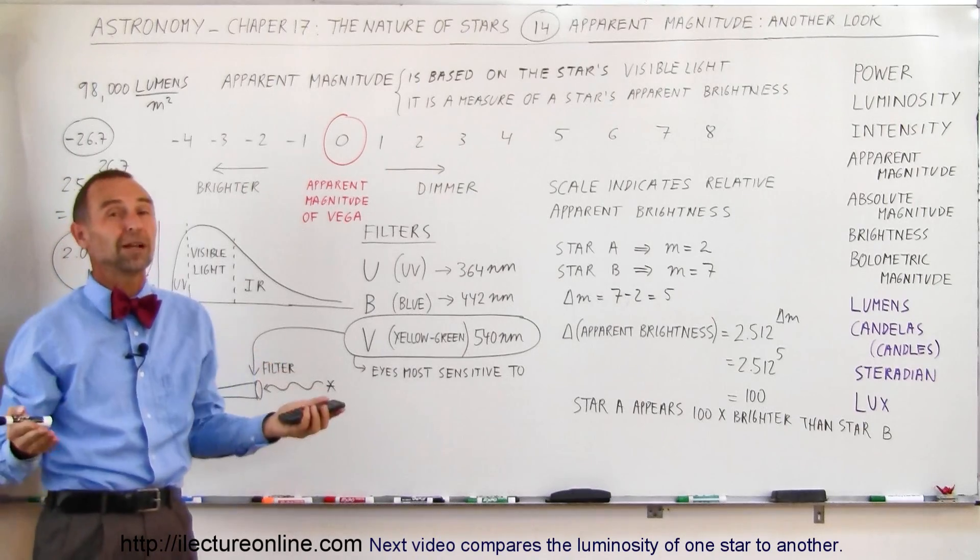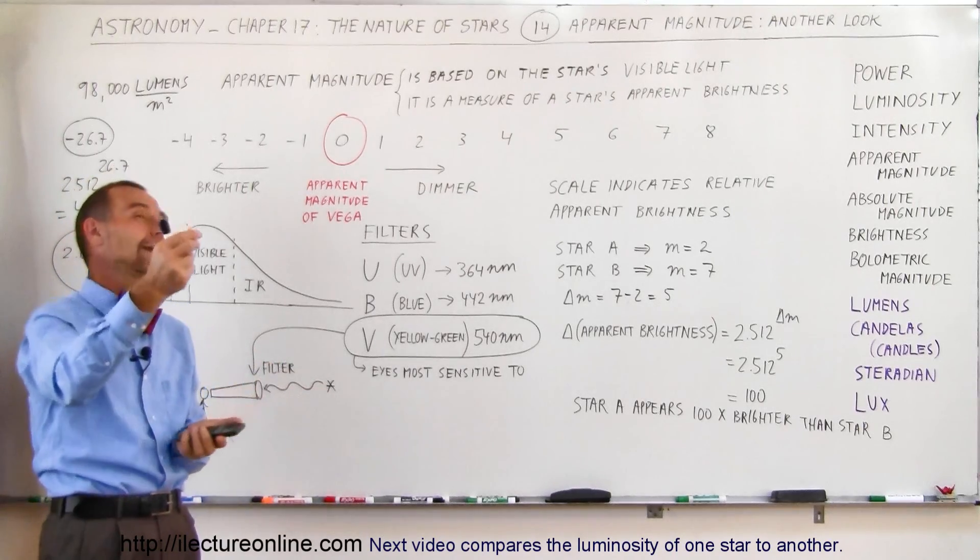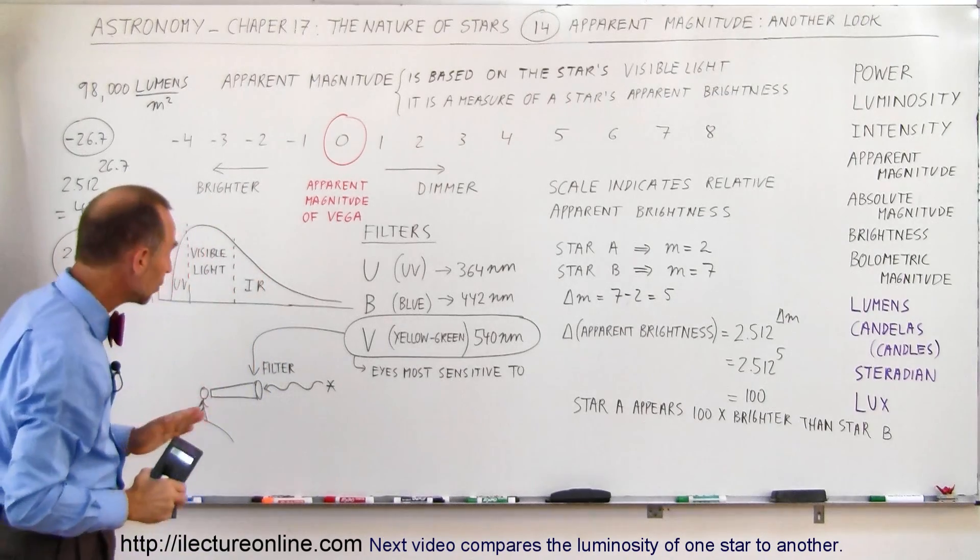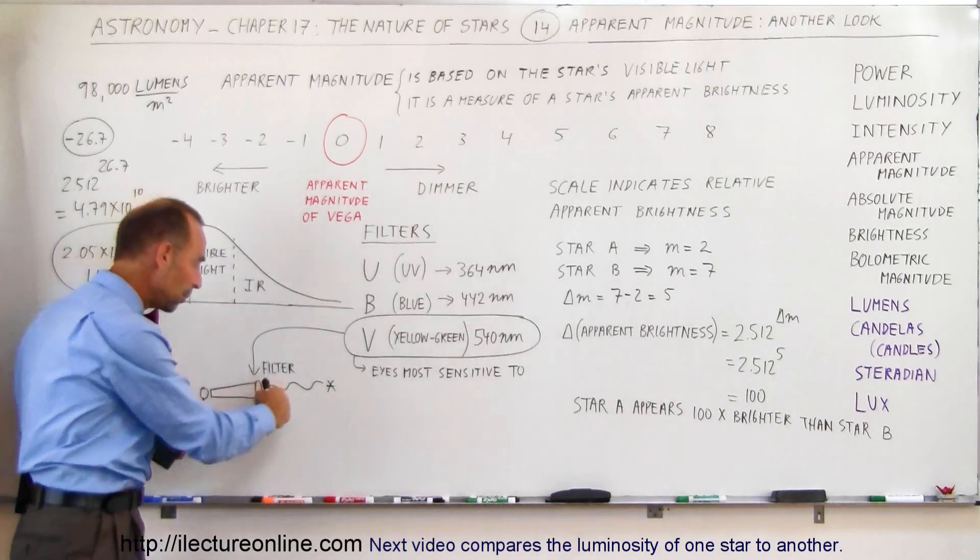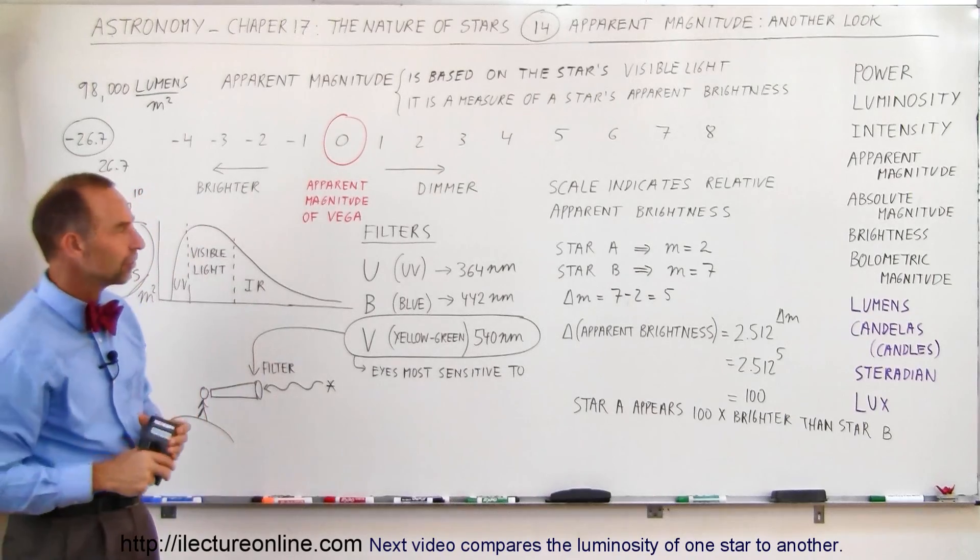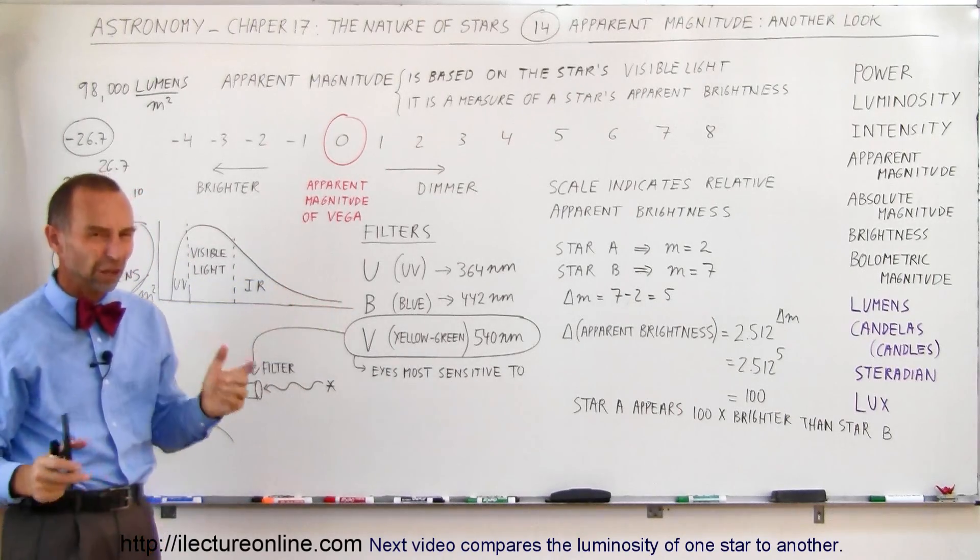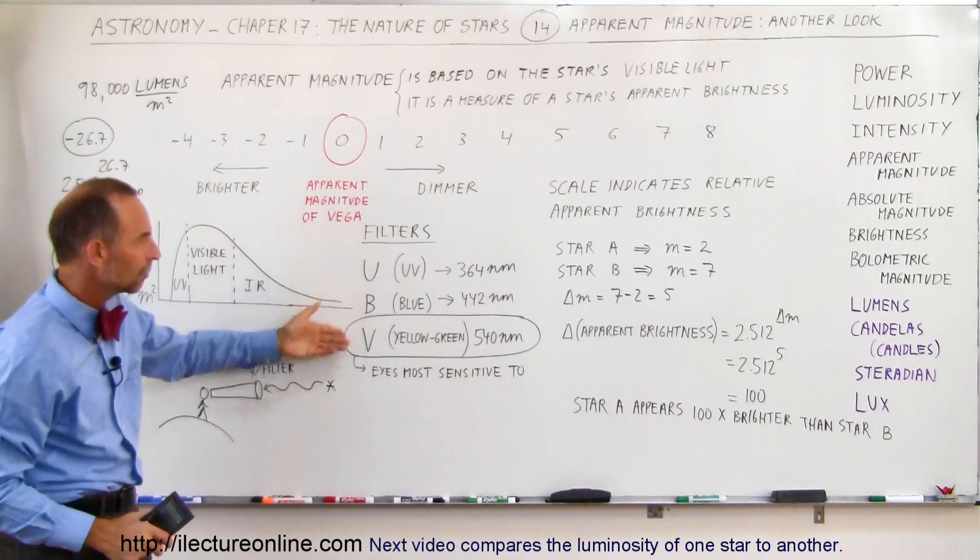Now how do we actually measure the apparent brightness of a star? It's not like we look at it and estimate saying, I think that star is about this bright. What we actually do is we take a telescope and we put a filter on it. We have different kinds of filters. For example, we have a U filter, a B filter, or a V filter. There's other filters as well, but these are the three common filters.